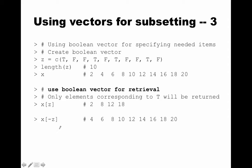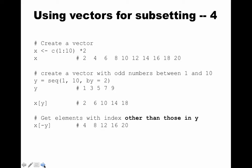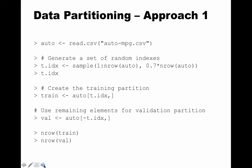And of course, like before, you can use minus to get the other elements. So this is just a recap. Now, using these ideas, let's see how we can create a training partition and a validation partition.